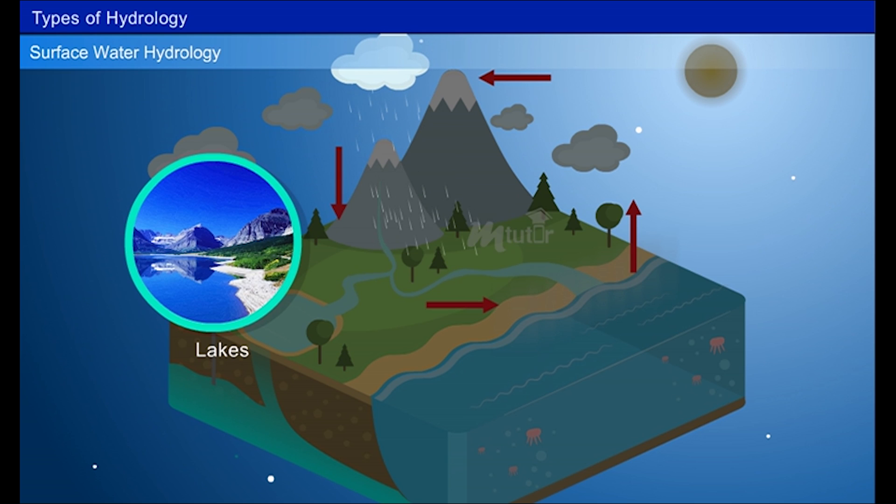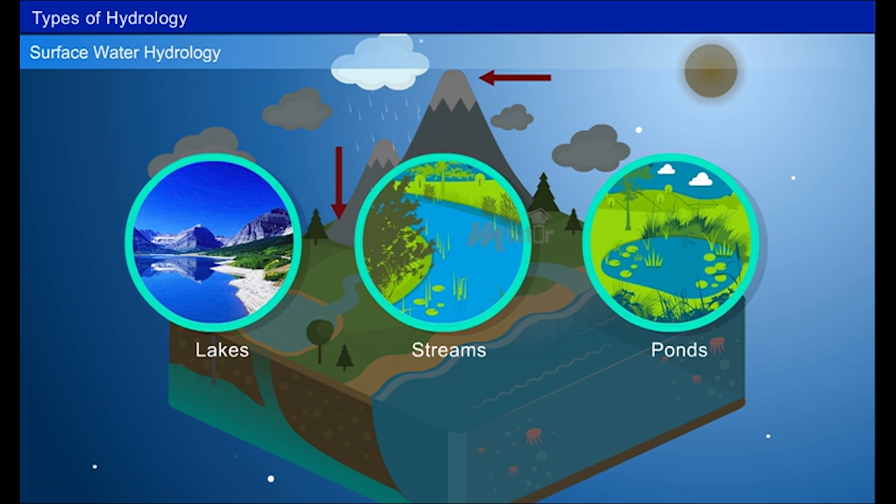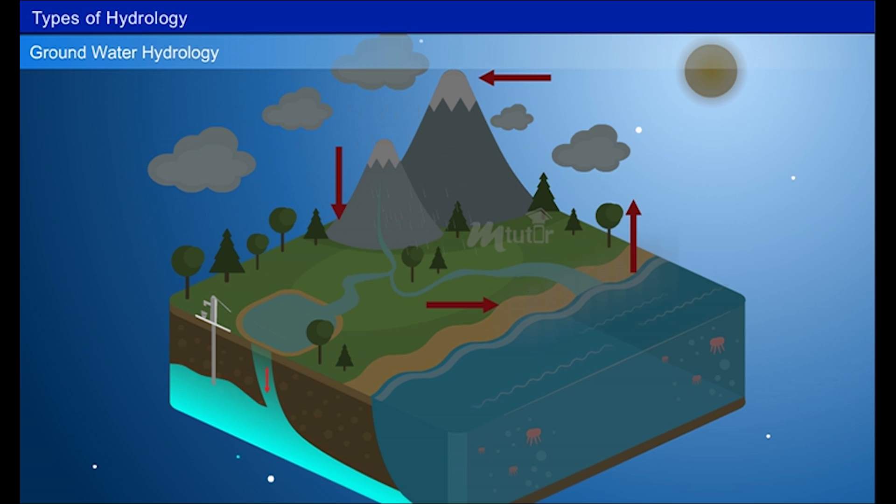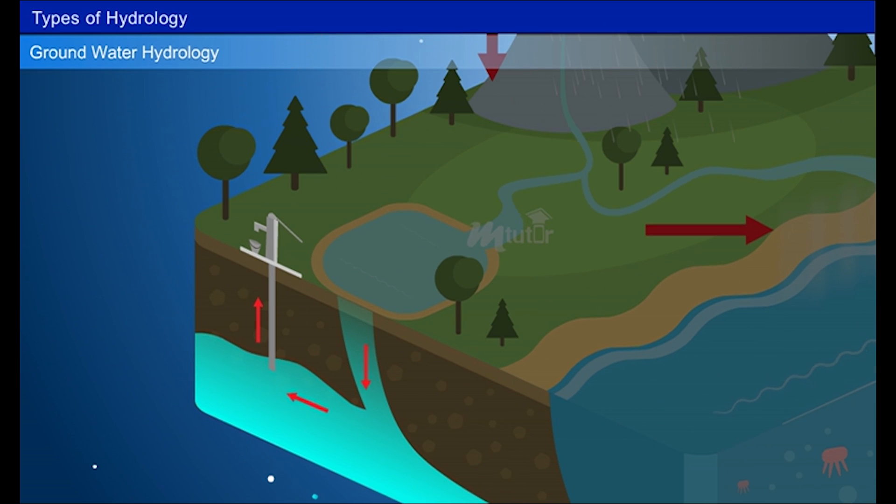Example, lakes, streams, ponds etc. Groundwater hydrology deals with occurrence and distribution of water beneath the surface of the earth. For example, aquifers etc.